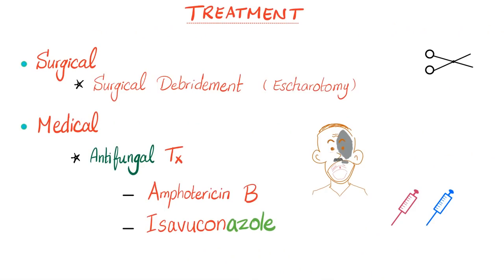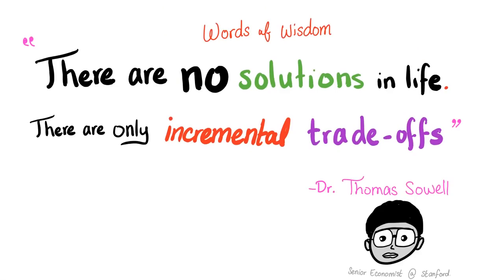How can we treat mucormycosis surgically and medically? Surgically: surgical debridement, known as escharotomy. Medical treatment: antifungal medication such as Amphotericin B and Isavuconazole, which is an antifungal. Don't forget - there are no solutions in life, there are only trade-offs.